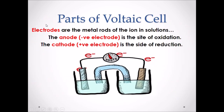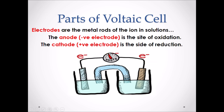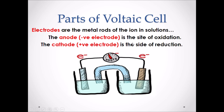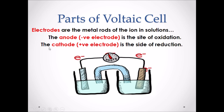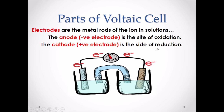Parts of a Voltaic Cell. Electrodes are the metal rods of the ions in each half reaction solution. We have an electrode in each beaker. The anode is the negative electrode and is the site of oxidation, which is the loss of electrons. The cathode is considered the positive electrode and it is the site of reduction, the gaining of electrons.